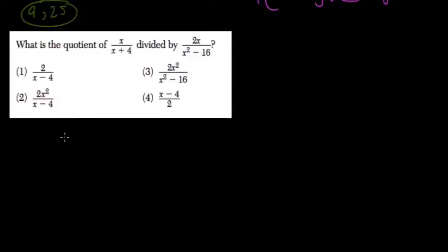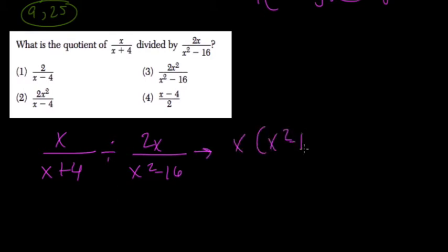What is the quotient of x over x plus 4 divided by 2x over x squared minus 16? We're dividing, so multiply by the reciprocal: x times x squared minus 16 over 2x times x plus 4.